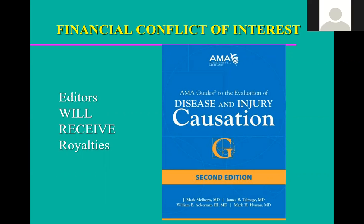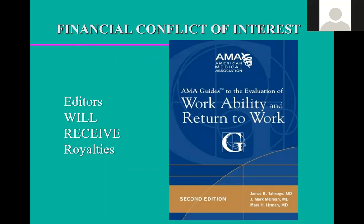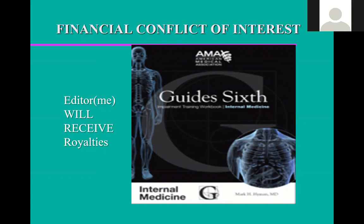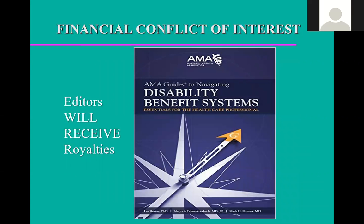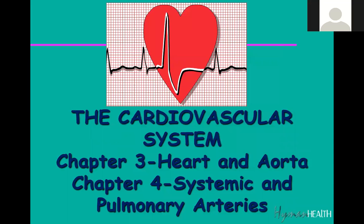This is the AMA Guides causation book — a very important resource for knowing what causes different illnesses. This is the AMA Guides workability and return-to-work book, which covers how to evaluate people with an injury or illness and determine whether they can perform certain job functions. This is the Guides sixth edition — mind you, any medical resource can be used to justify an opinion. And for anyone new to disability, there's a book covering short-term disability, long-term disability, and Social Security — you can read it in about an hour and a half.